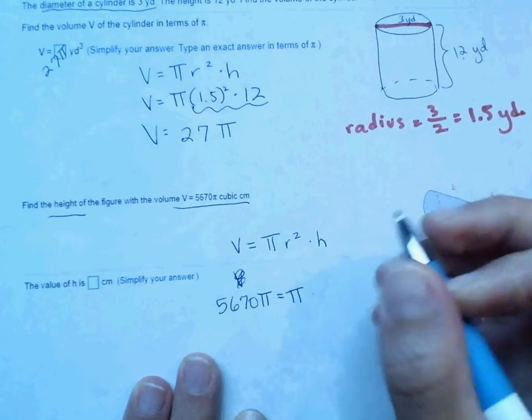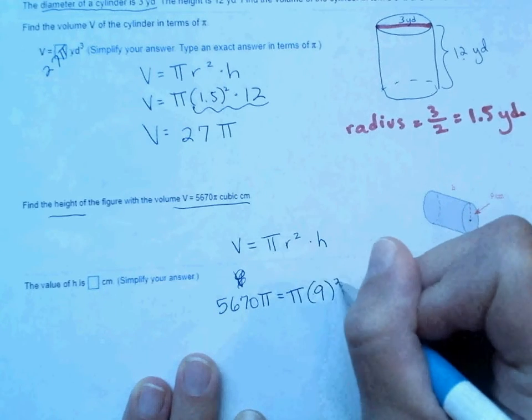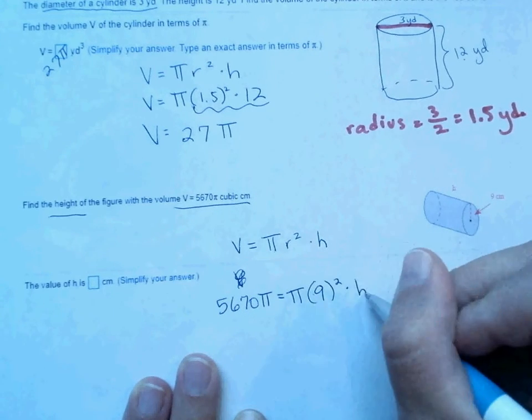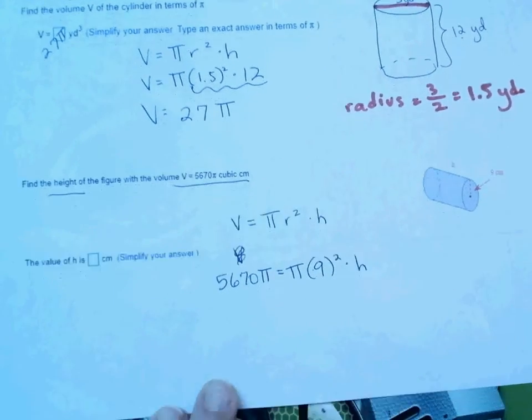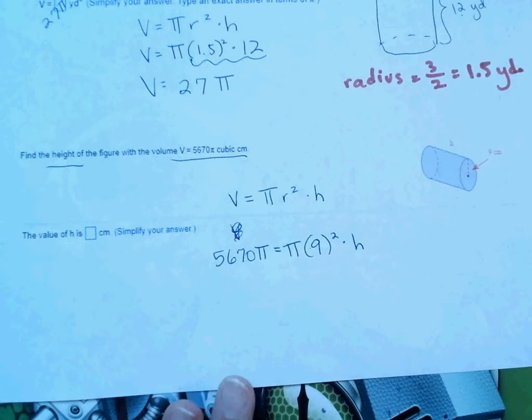Radius, do we have a radius? Yes, we do. It's 9, so I'm putting 9 squared times height, which is h. Okay, so from here, you can put them each on desmos, or you can solve by hand.